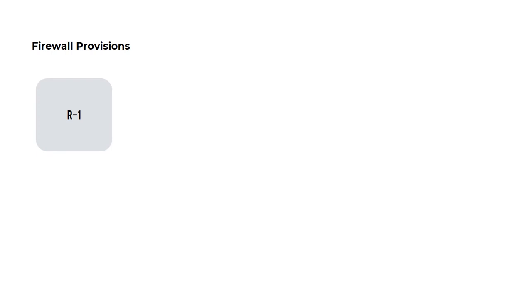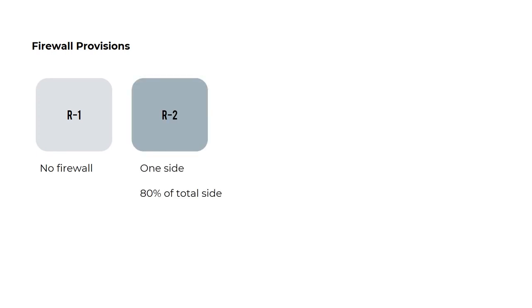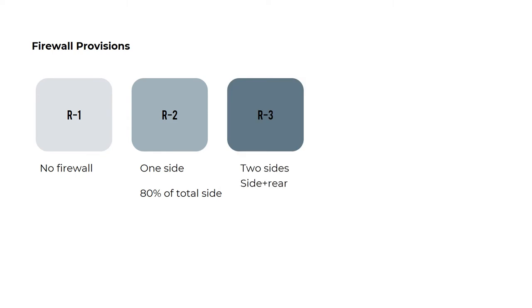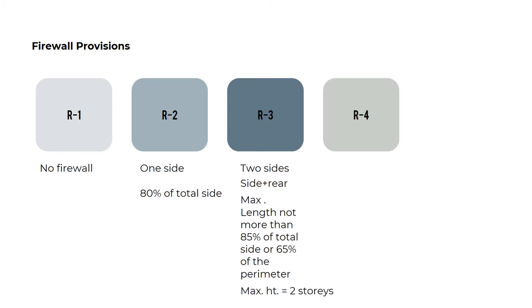Firewall provisions by zone: For R1, no firewall. For R2, one side — 80% of total side. For R3, two sides — either both sides or side plus rear — with a maximum length of not more than 85% of total side or 65% of the perimeter. Maximum height is up to 2 stories.